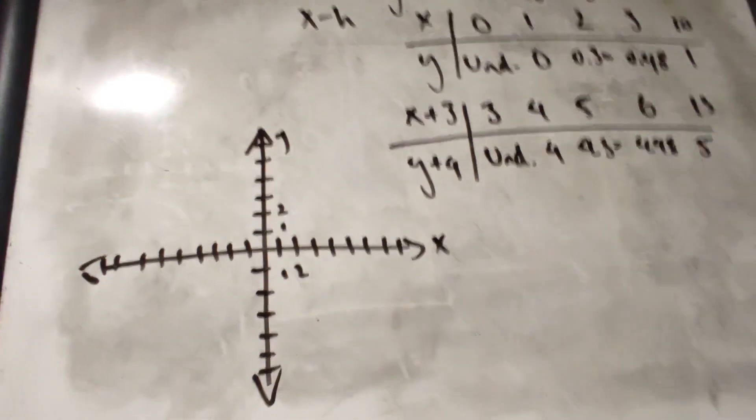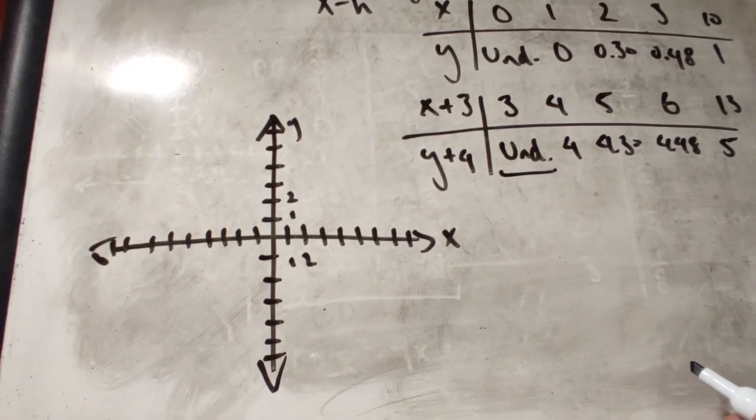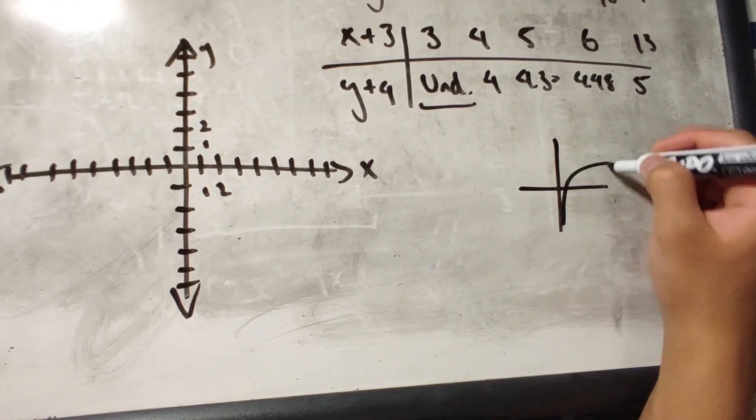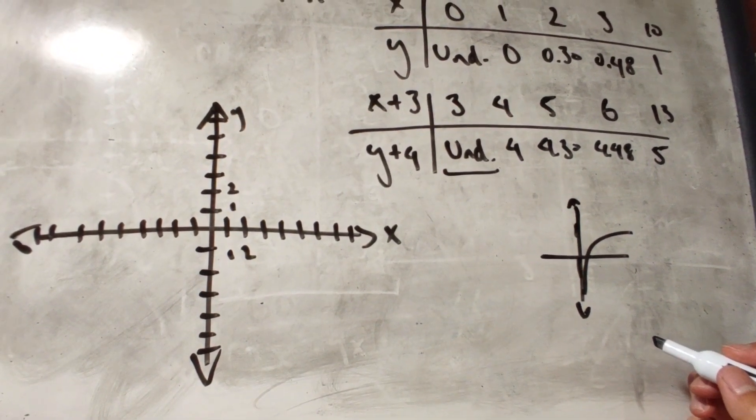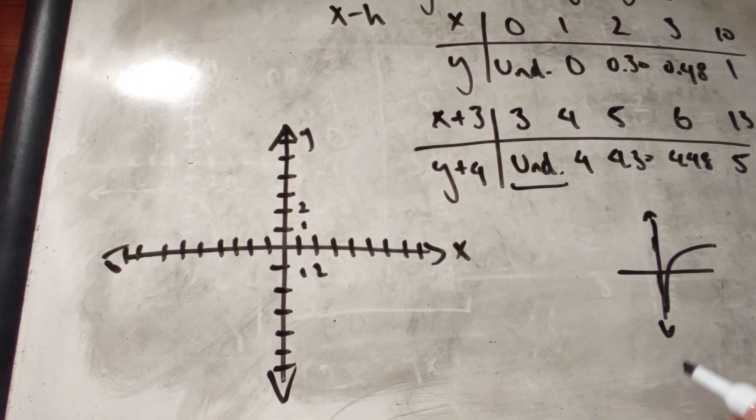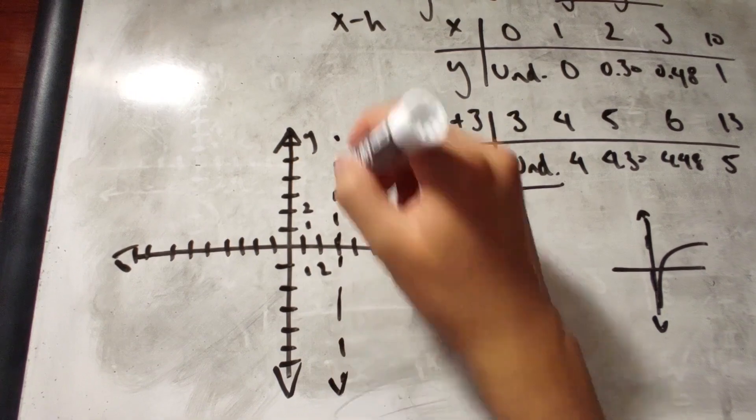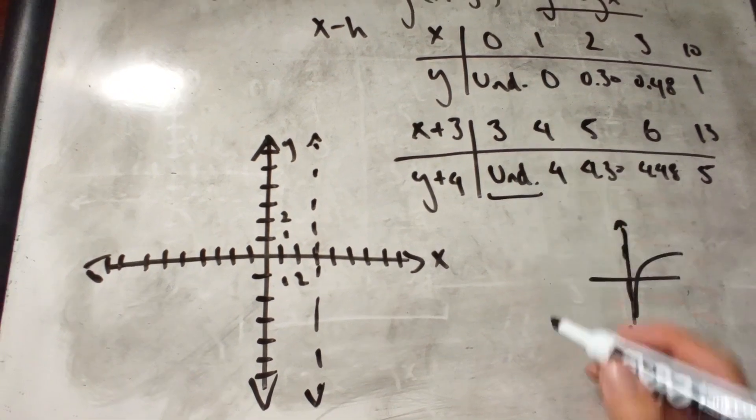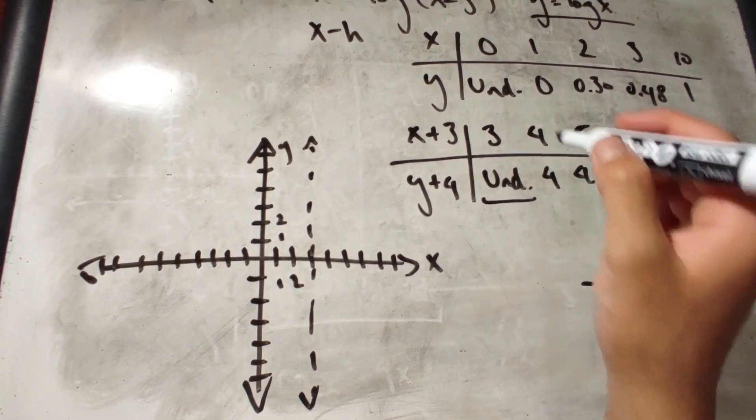When we look at this part, where it says undefined, in this case, that is the vertical asymptote. Because in the original log function, this part is the vertical asymptote. You can't put a negative value inside a log and get a valid answer. So, in this case, this asymptote is shifted to the right by 3 units. So, the vertical asymptote is at x equals 3. And that is shown here, where when we plug in 3, the value is undefined. Also, it becomes undefined when x is 0 or lower.